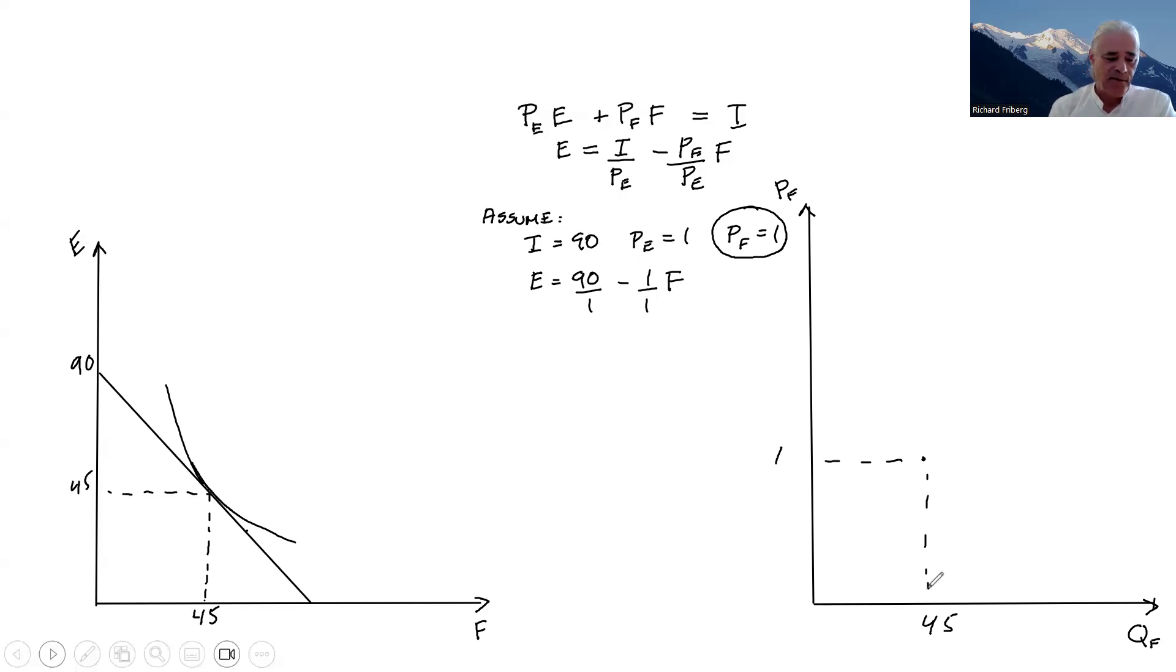So let's assume that PF instead is equal to 2. Okay, so the budget constraint then equals 90 minus 2 over 1 times F. So it's twice as steep. If you only buy E, the price of food doesn't matter. But as soon as you want to buy some food, the price of food matters. And you will be able to buy less than you were in the case where for a given consumption of food, you will be able to buy less E if you meet these new prices. So this new higher price, there will be a new tangency point in this particular case. So it happens that quantity is 15.